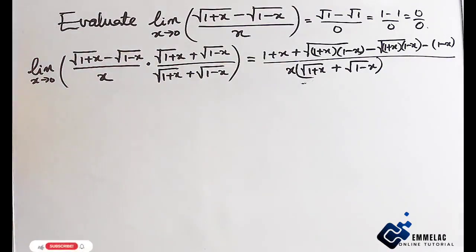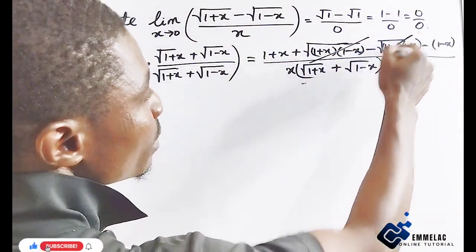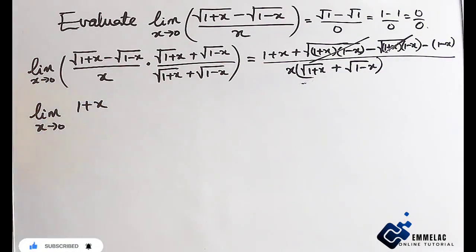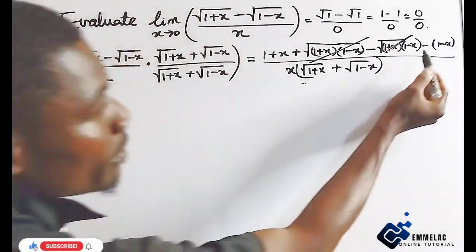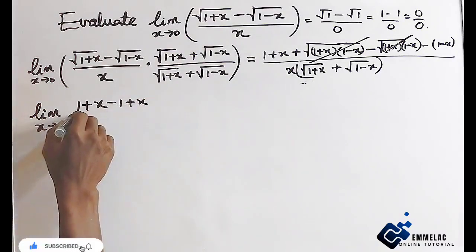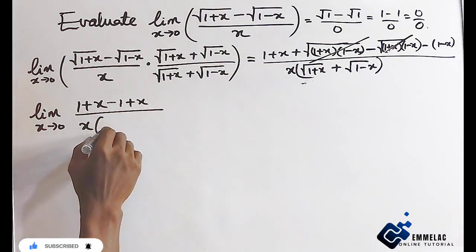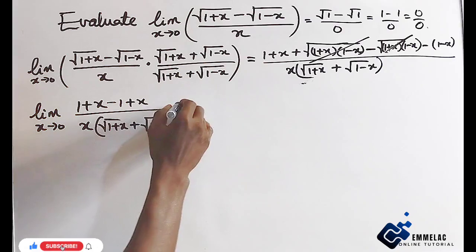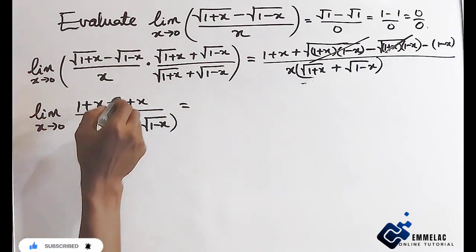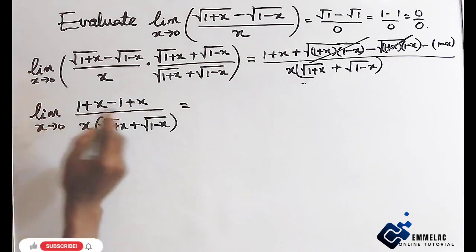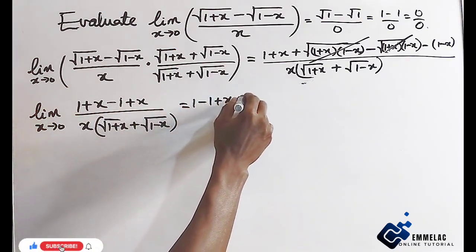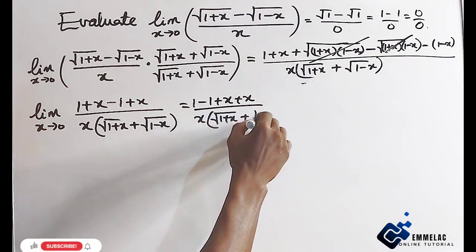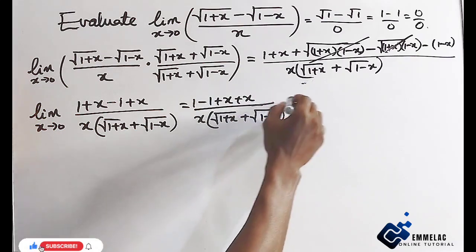Expanding the numerator, we have 1 plus x minus 1 plus x, and we can see that the 1 and negative 1 eliminate each other, leaving us with 1 plus x plus x, which gives us 2x. So the numerator simplifies to 2x, all over x times the square root of 1 plus x plus the square root of 1 minus x.